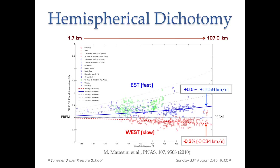From these waves, if you take the observed travel times and reference them to a symmetric model like PREM, plotting as a function of epicentral distance — if the inner core has no anisotropy, the points stand on zero. Positive residuals mean faster wave propagation than the reference model; negative means slower. The red points — western hemisphere probing — are all predicted to be 0.3% slower than the reference model, whereas the eastern hemisphere is 0.5% faster. This is the hemispherical dichotomy: one hemisphere is faster and the other is slower.